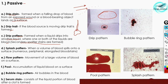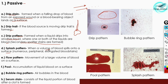The fourth subtype is the splash pattern. When a volume of blood spills onto a surface, numerous peripheral elongated blood stains form — these are the splash pattern. A larger volume of blood spills onto a surface. You can see in this image an example of the splash pattern.